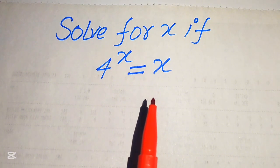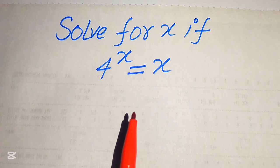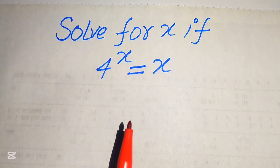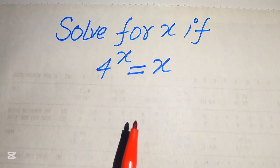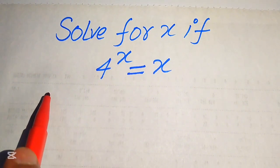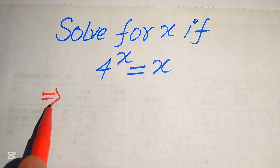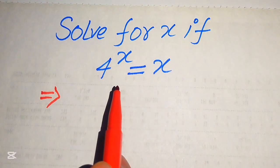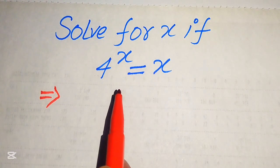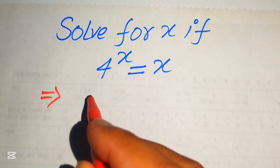I hope you like this method, but if you have any other method in mind please don't hesitate to write it in the comment section. In order to find the value of x, first we need to remove the variable term from the exponent so that we can take log on both sides.